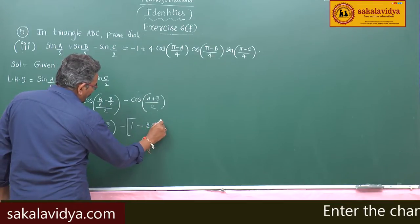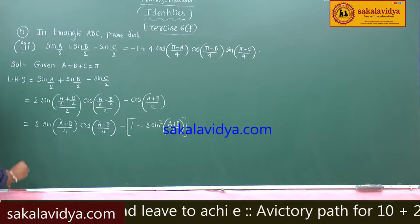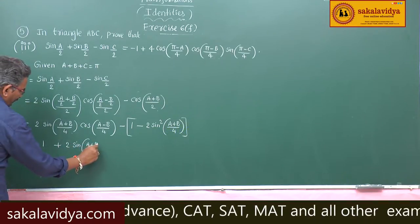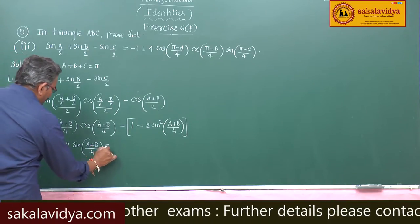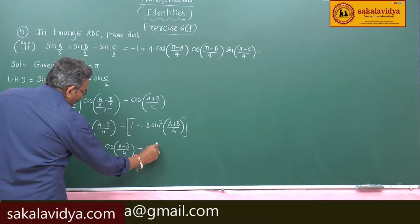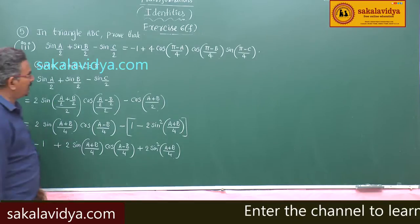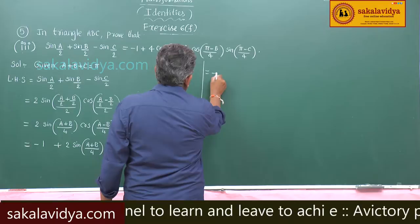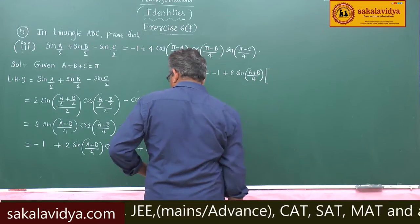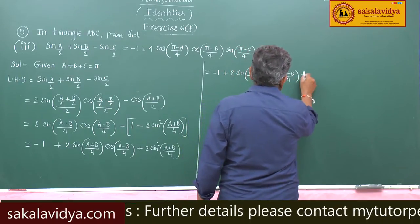So we get 1 - 2·sin²((a+b)/4). Expanding: -1 first, then + 2·sin((a+b)/4) · cos((a-b)/4), and minus into minus gives + 2·sin²((a+b)/4). Taking 2·sin((a+b)/4) common from the last two terms: -1 + 2·sin((a+b)/4) · [cos((a-b)/4) + cos((a+b)/4)].